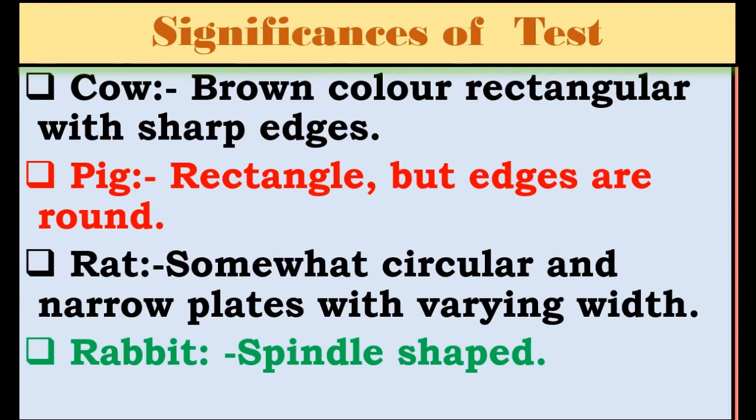In the case of cow, the shape of the crystal is rectangular, brown in color, and rectangular with sharp edges. In the case of pig, the shape is also rectangular but the edges are round.